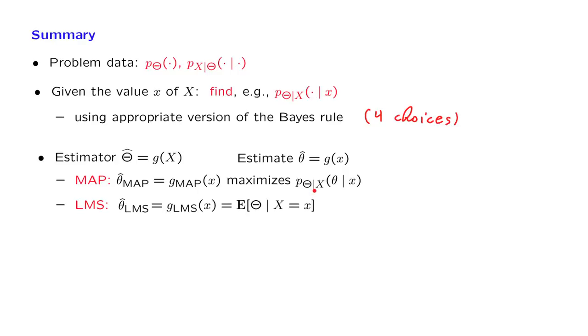Another estimator is the one that we call the LMS or least mean squares estimator, which calculates the conditional expectation of the unknown parameter given the observations that we have obtained.